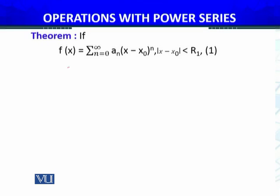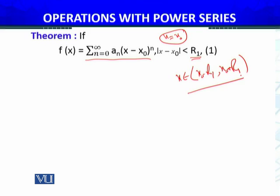if f of x is represented by this power series about x equals x naught, of course, and the radius of convergence for that power series is r1, it means that series is absolutely convergent whenever x belongs to the interval x naught minus r1 to x naught plus r1.